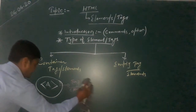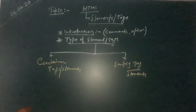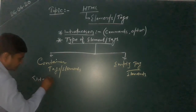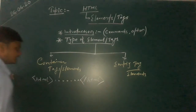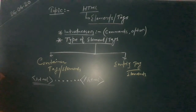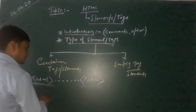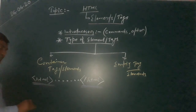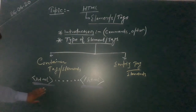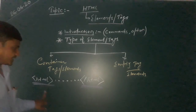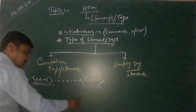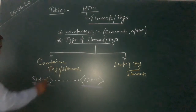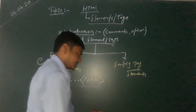Let's look at examples of container tags and empty tags. For a container tag, for example the HTML tag, you write an opening tag and then a closing tag. The tag which has both positions — opening and closing — is known as a container tag. When writing HTML code, the opening tag comes first and the closing tag follows.